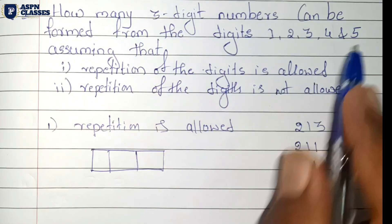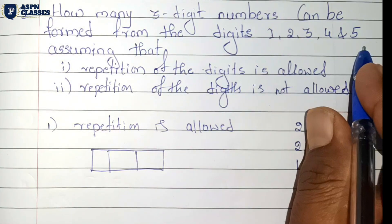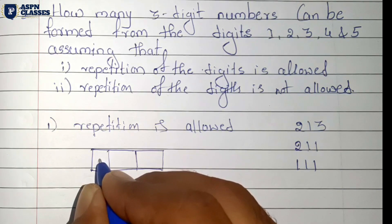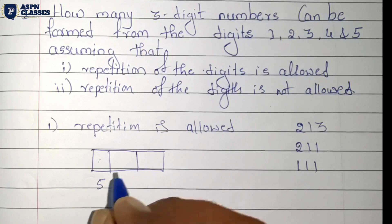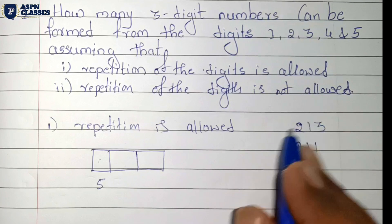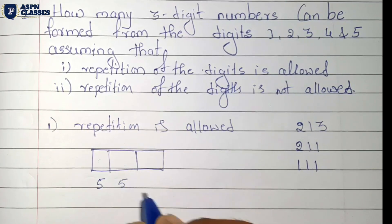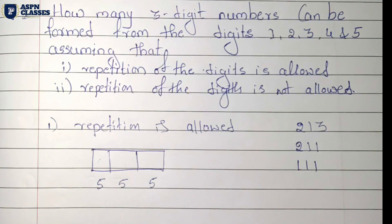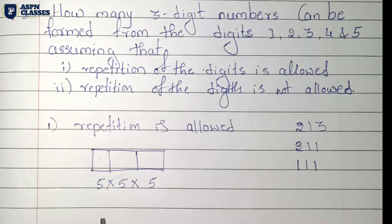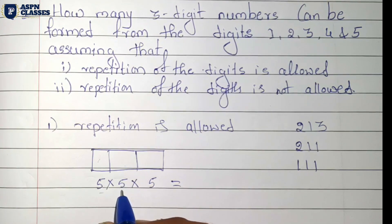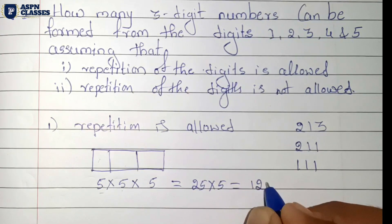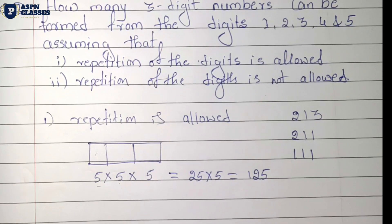In the first place we have 5 number possibilities, in the second place we also have 5, and in the third place also 5, because repetition is allowed. By the multiplication principle, we multiply: 5 into 5 is 25, and 25 into 5 is 125. So this is the total number of arrangements — the answer is 125.